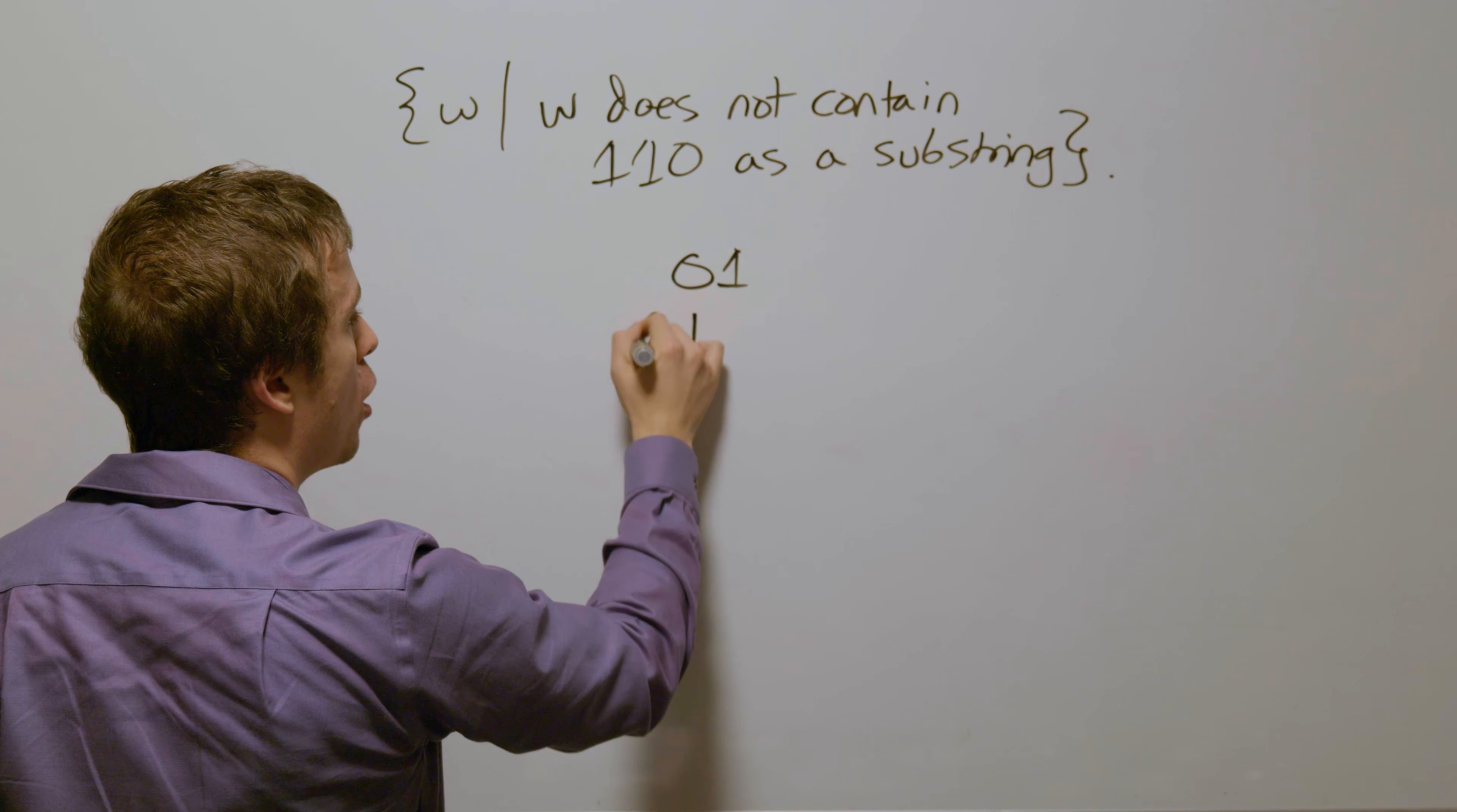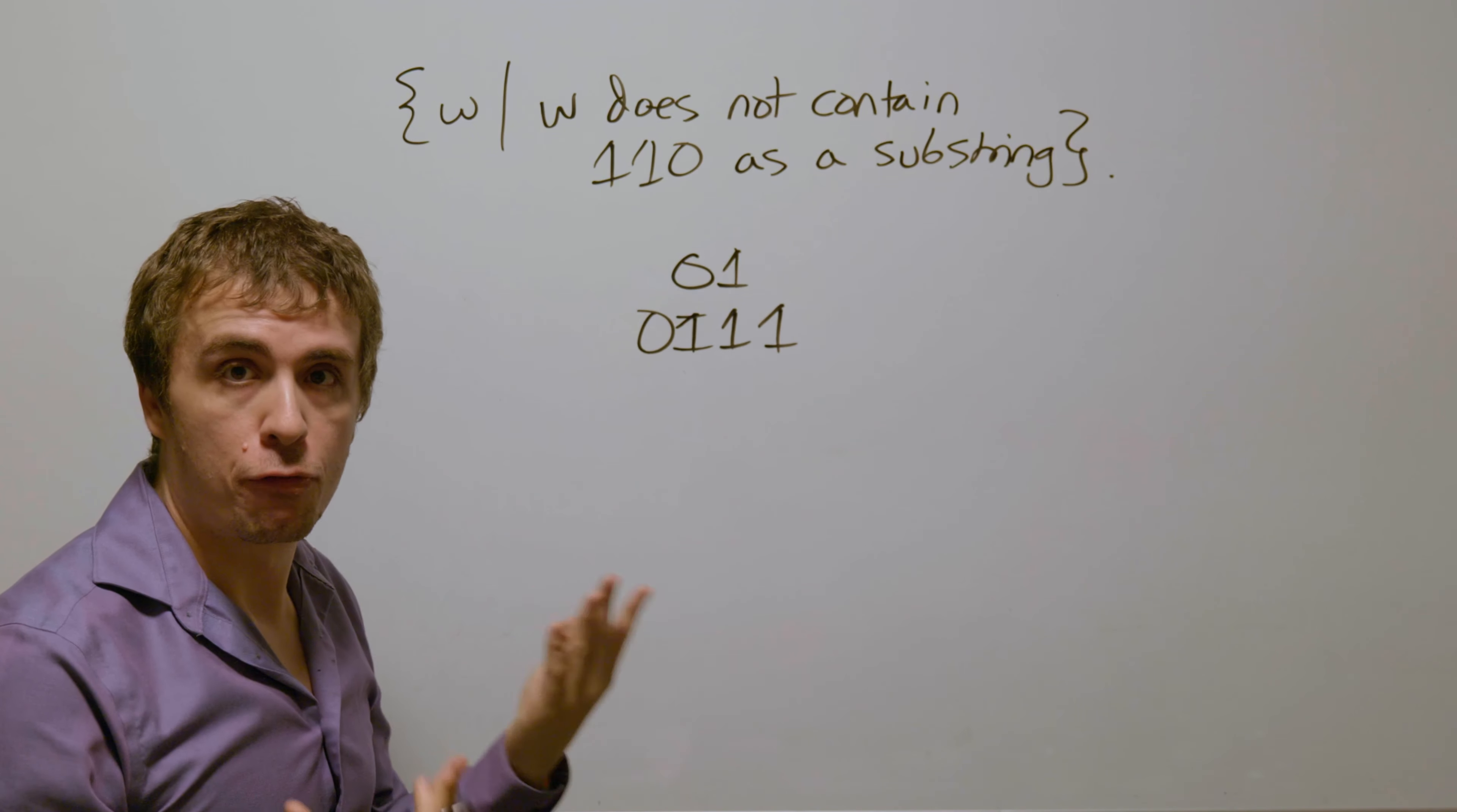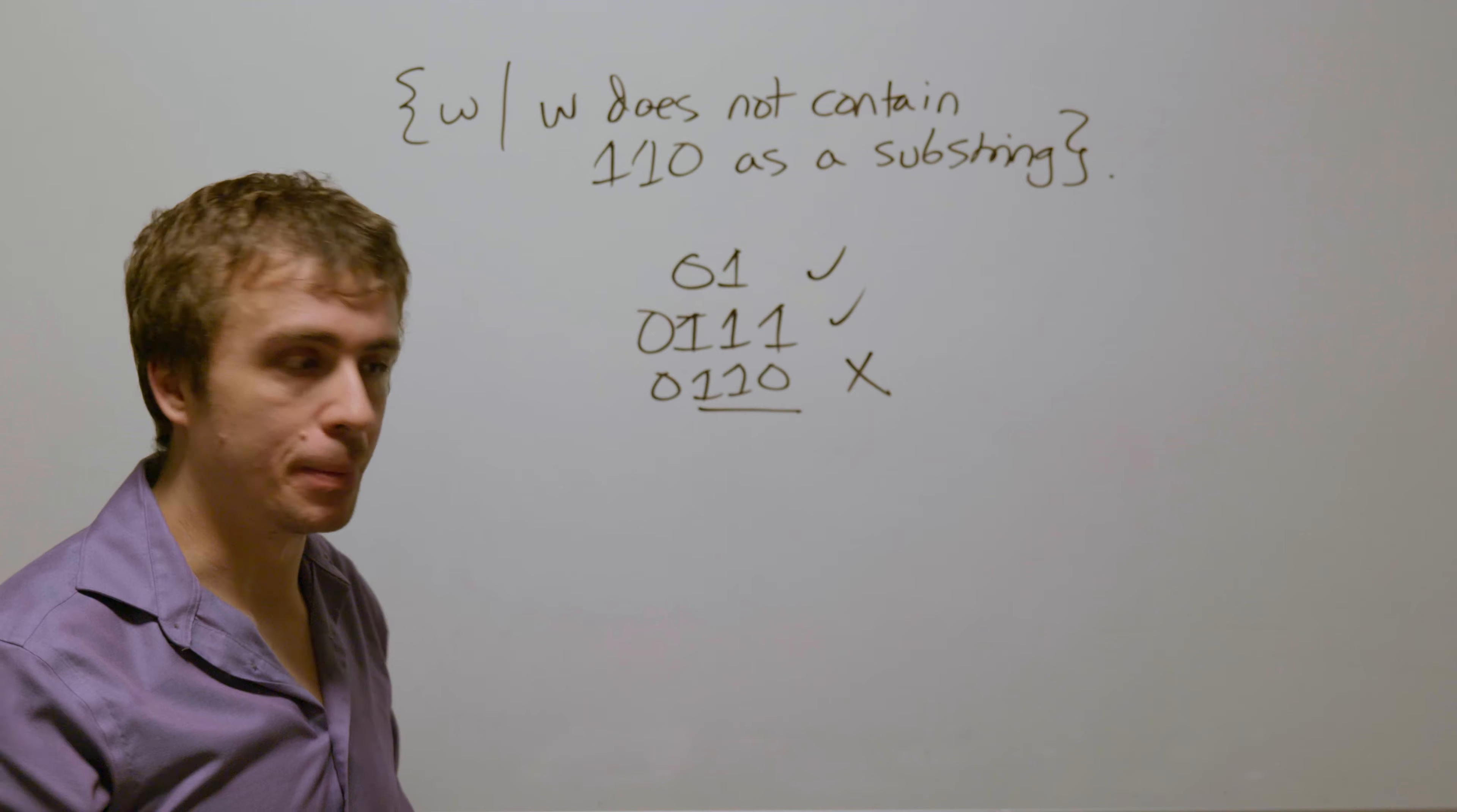If we have 0111, then that does not have 110 anywhere as a substring, and so therefore should be accepted by a DFA for this language. But if we have 0110, then it has 110 as a substring, and so therefore should not be accepted.